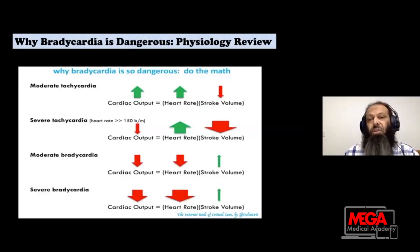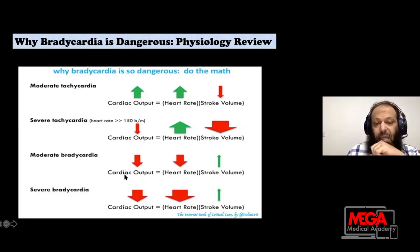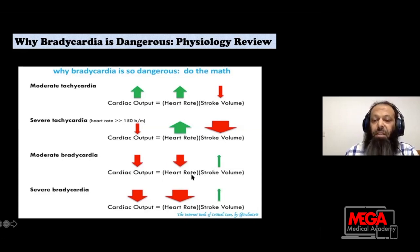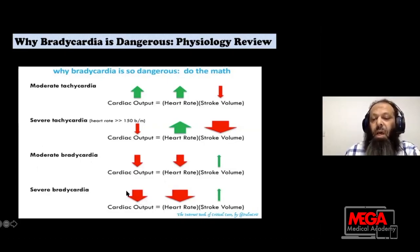Why is bradyarrhythmia dangerous? If we remember the equation from physiology, cardiac output equals heart rate multiplied by stroke volume. So for a moderate bradyarrhythmia, that will lead to a decrease in cardiac output, and the only compensation will be an increase in stroke volume. If bradyarrhythmia is more severe, cardiac output will drop more, and we are left with only that compensatory mechanism — the stroke volume.